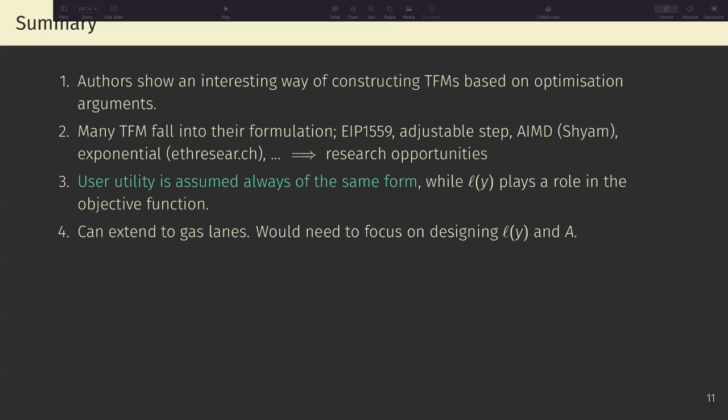So in summary, the authors show an interesting way of constructing transaction fee mechanisms based on optimization arguments. Many transaction fee mechanisms fall into this formulation, such as the EIP 1559, adjustable step, the additive increase multiplicative decrease work that I know Sham has worked on, the exponential EIP 1559, which means there's a lot of research opportunities here. User utility is assumed to always be of the same form, while L of Y plays a role in the objective function. And clearly, this can extend to gas lanes.